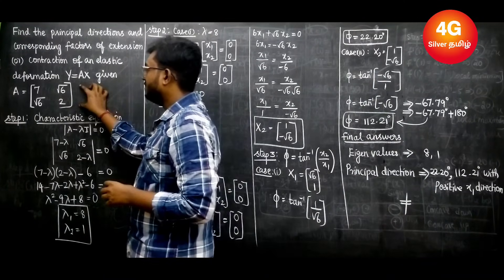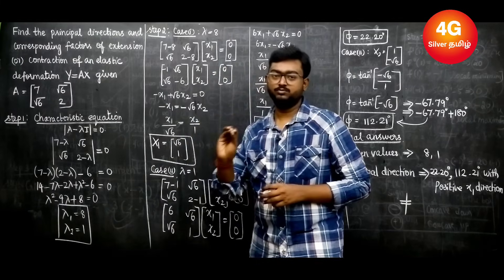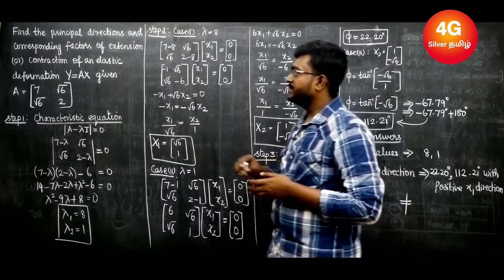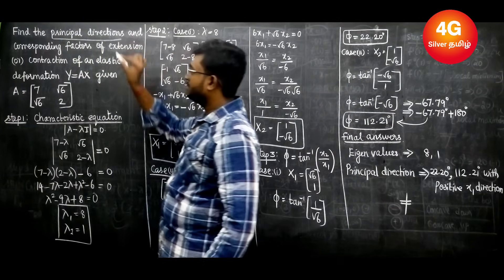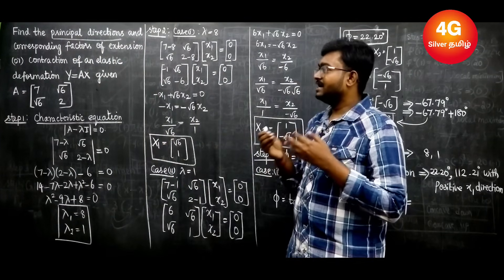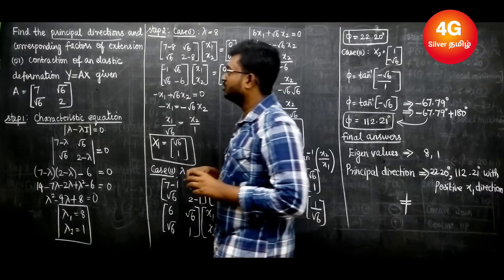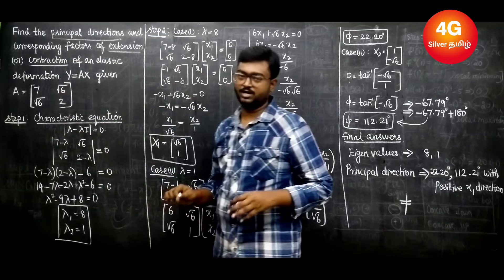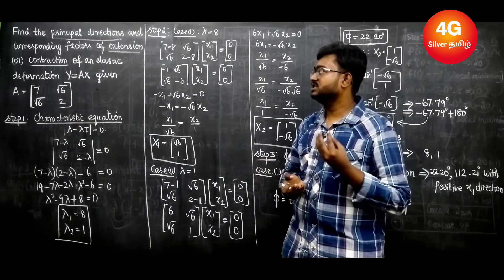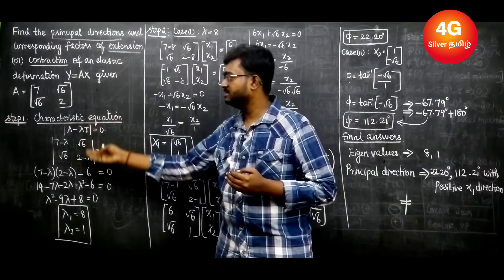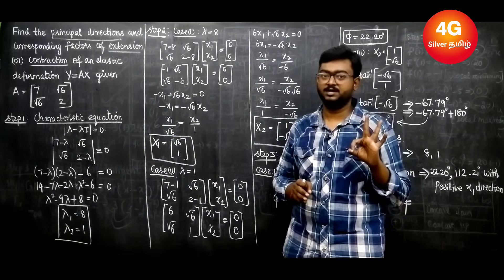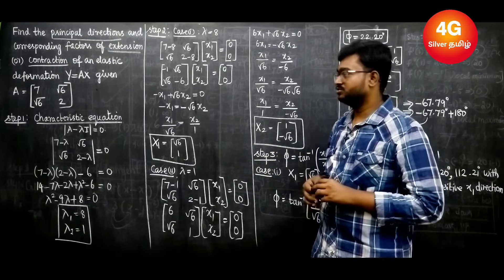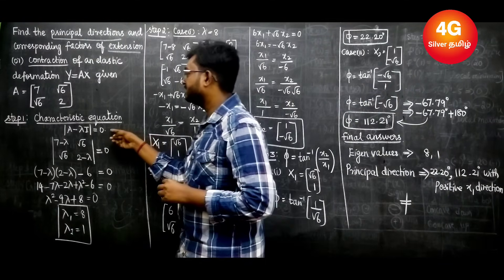In the A matrix, this is a 2×2 matrix. We will look at principal directions, and that's why we will look at eigenvalues. The key words are extension or contraction, and the principal directions. We will solve this problem in simple steps. Step 1: form the characteristic equation.